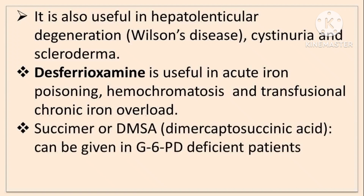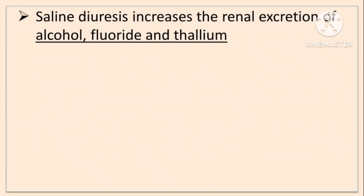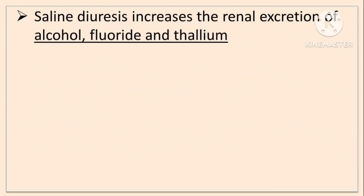Succimer (DMSA — dimercaptosuccinic acid) can be given in G6PD-deficient patients. For absorbed poison, there are certain methods to remove it. First is to increase renal excretion — alkaline diuresis and acid diuresis are used. Saline diuresis increases renal excretion of alcohol, fluoride and thallium.